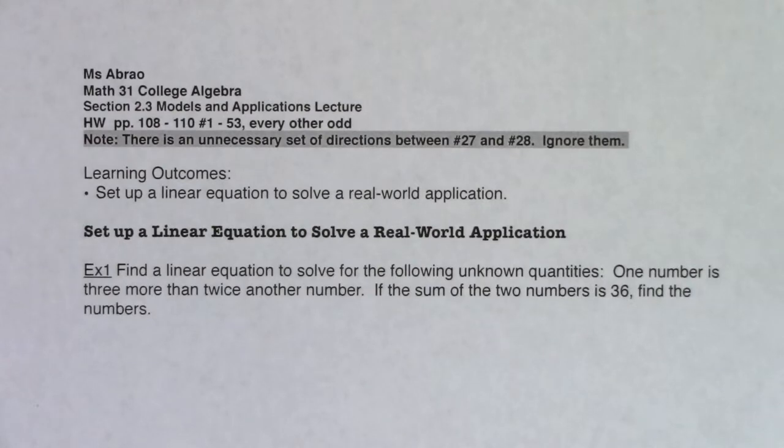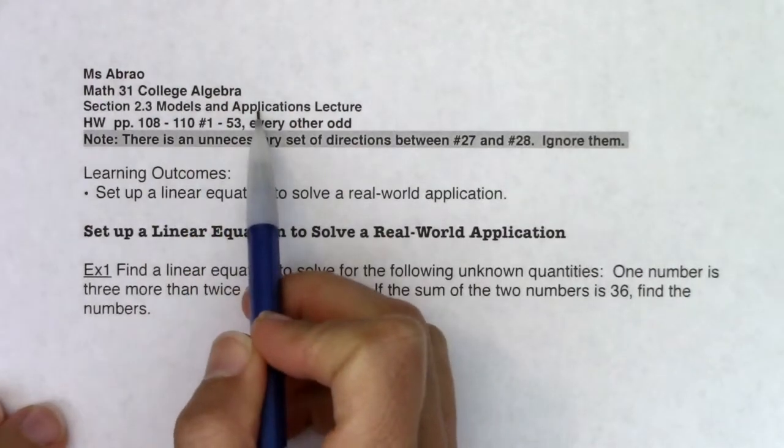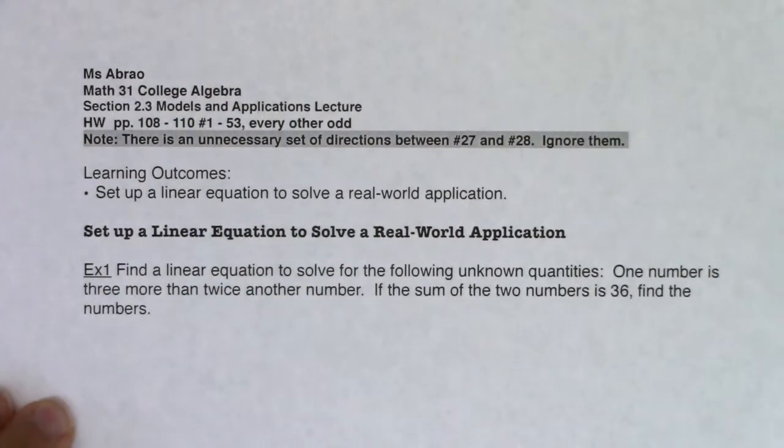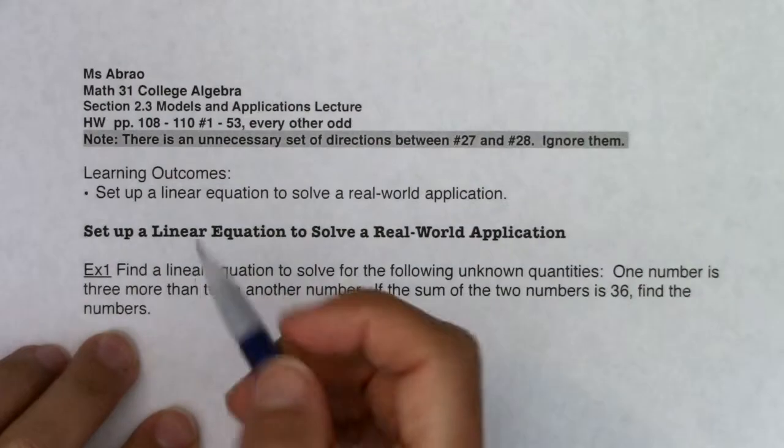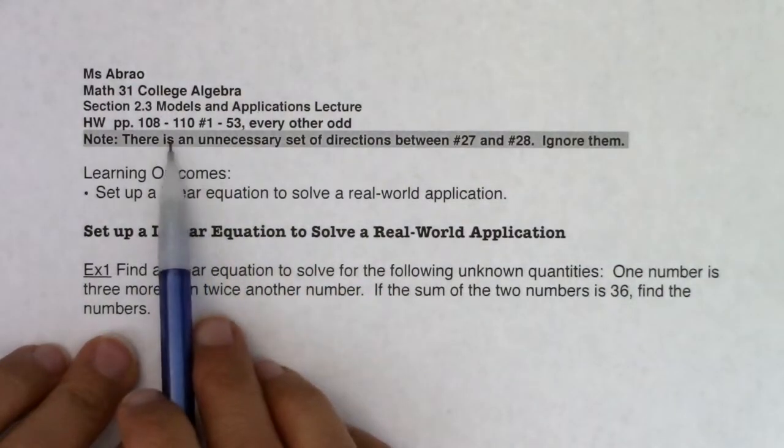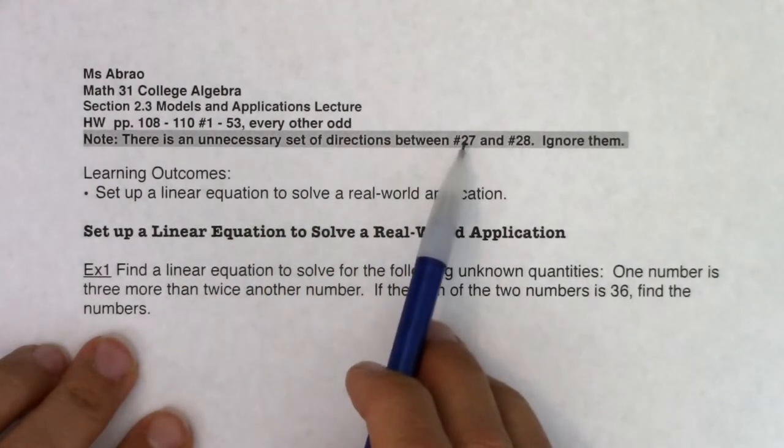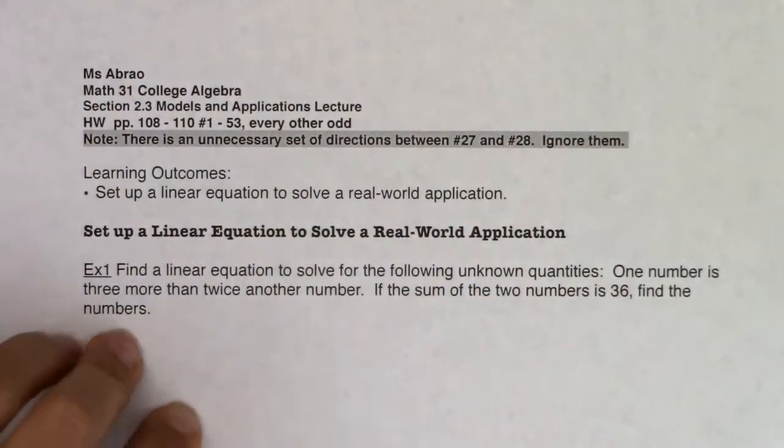Hey Math 31, let's start getting into section 2.3, Models and Applications, which is fancy math speak for word problems. You're going to do every other odd again like always, but I just want you to see there's a little note I put here: there's an unnecessary set of directions between numbers 27 and 28, just ignore them. It looks like they had a typo in the book.